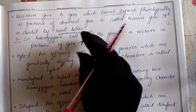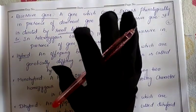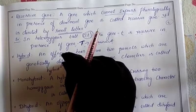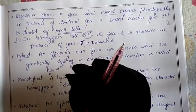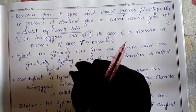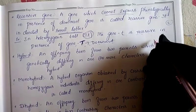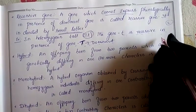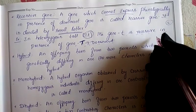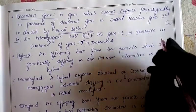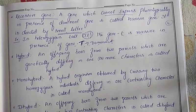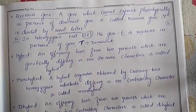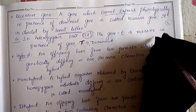Inside every cell the nucleus is present, and inside the nucleus 46 chromosomes are present. In those 46 chromosomes, genes are present which hold the characters. All genes have alleles, and alleles are represented in the form of capital letters or small letters. Capital letters indicate dominancy whereas small letters indicate recessiveness.